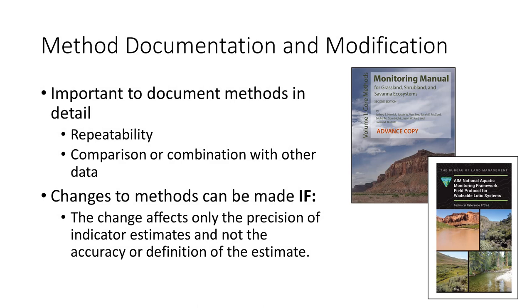Documenting your methods in excruciating detail is critical. This includes a definition of what the indicators are, the specifics for how the methods are implemented, and your data quality control procedures. This step is often overlooked or poorly done. But consider that the repeatability of a study or the ability to detect change over time hinges on the ability to replicate the methods. Additionally, monitoring data sets from different times or places can only be compared or combined if the methods were well described and compatible.